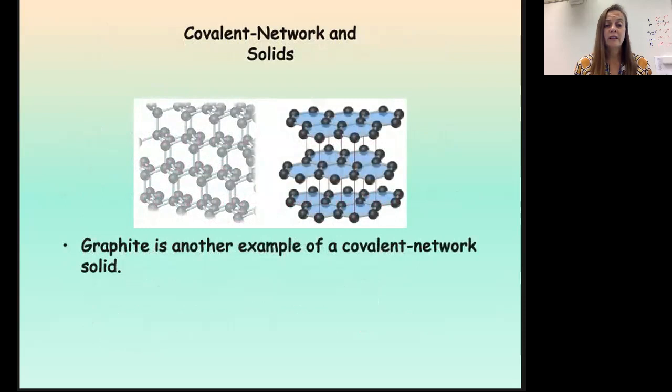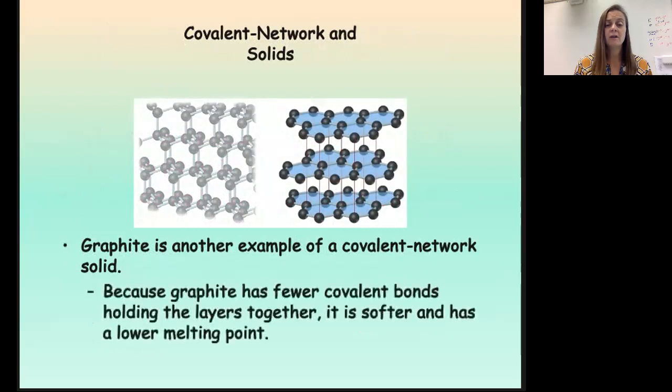If we look at graphite, it's a different type of covalent network solid. With graphite, we tend to have sheets of carbon, and those sheets are all covalently bonded together. Then there are occasional links between the sheets, and those links are sometimes covalent bonds and sometimes intermolecular forces.